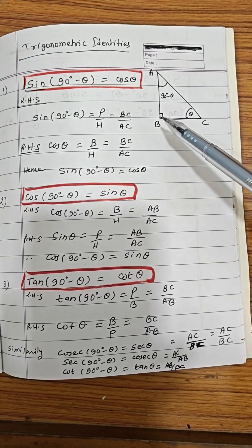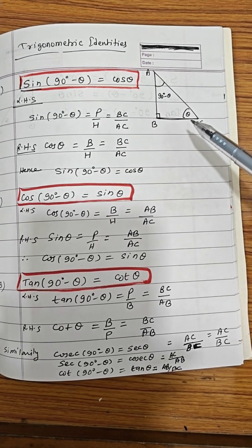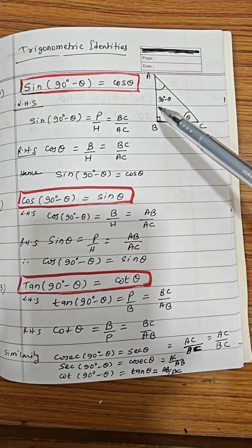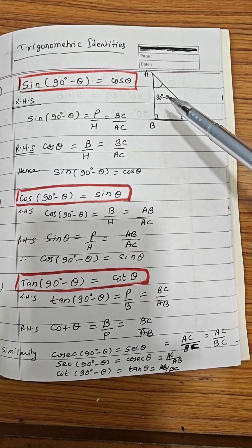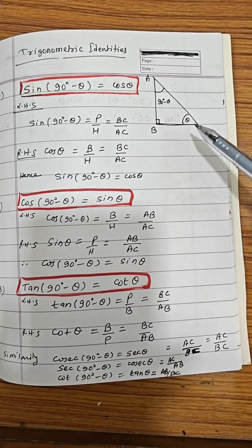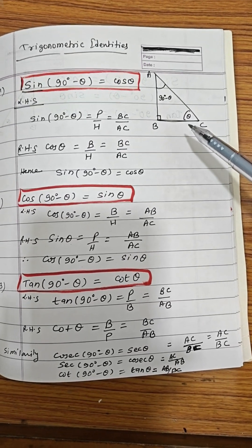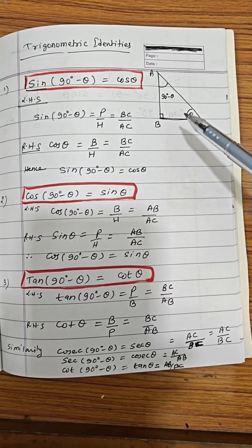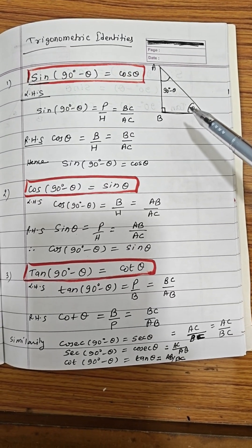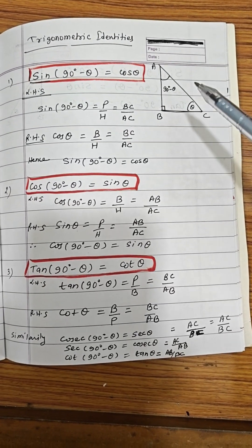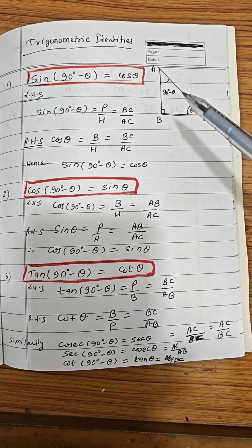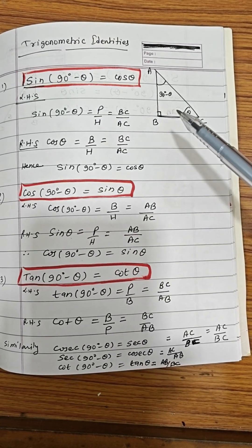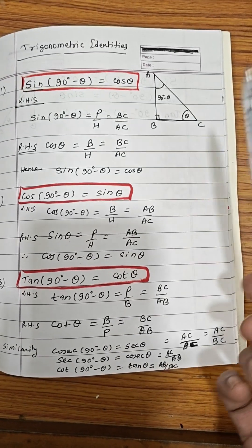So this angle is 90°, this is θ, and this is 90° - θ. So θ and θ will get cancelled and you will have a 180° sum. So that factor will be used here to solve this.